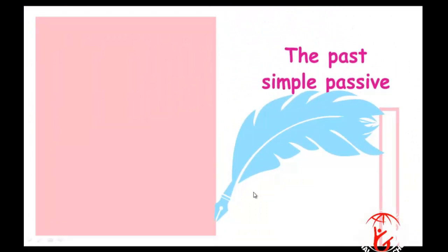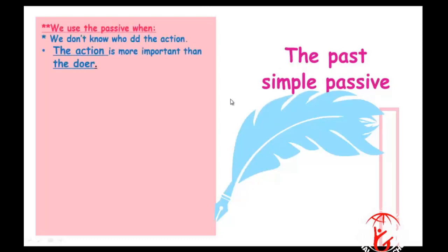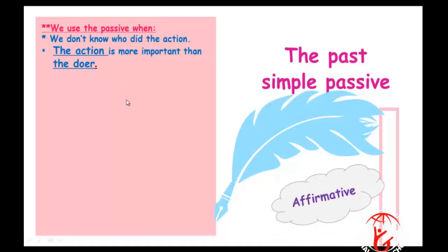Now let's move to our grammar — the Past Simple Passive. Past simple is when you talk about something that happened in the past, using the past form of the verb. We use the passive for two reasons: number one, when we don't know who did the action; number two, when the action is more important than the doer.